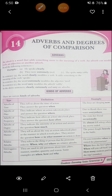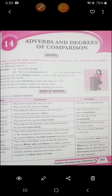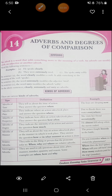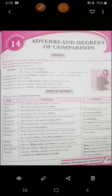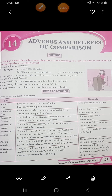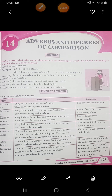Second is adverbs of place. This indicates where an action took place and you answer the question 'where'. Example: 'Due to floods, there was water everywhere.' Then there is adverbs of frequency — like how often that action took place. Example: 'She visits her friend occasionally.' How often she visits? Occasionally.